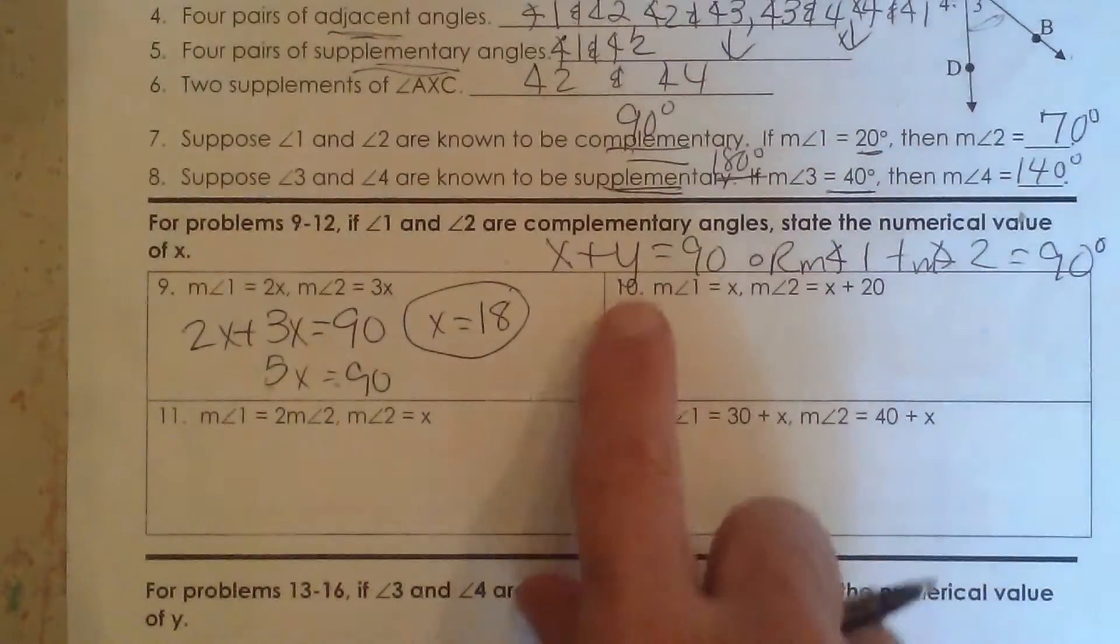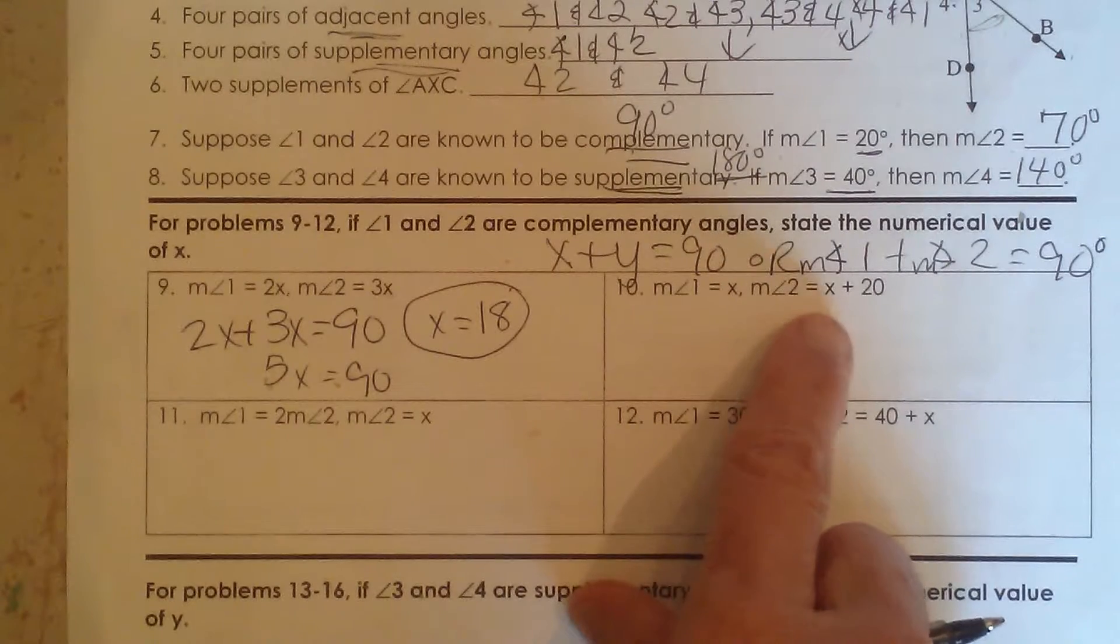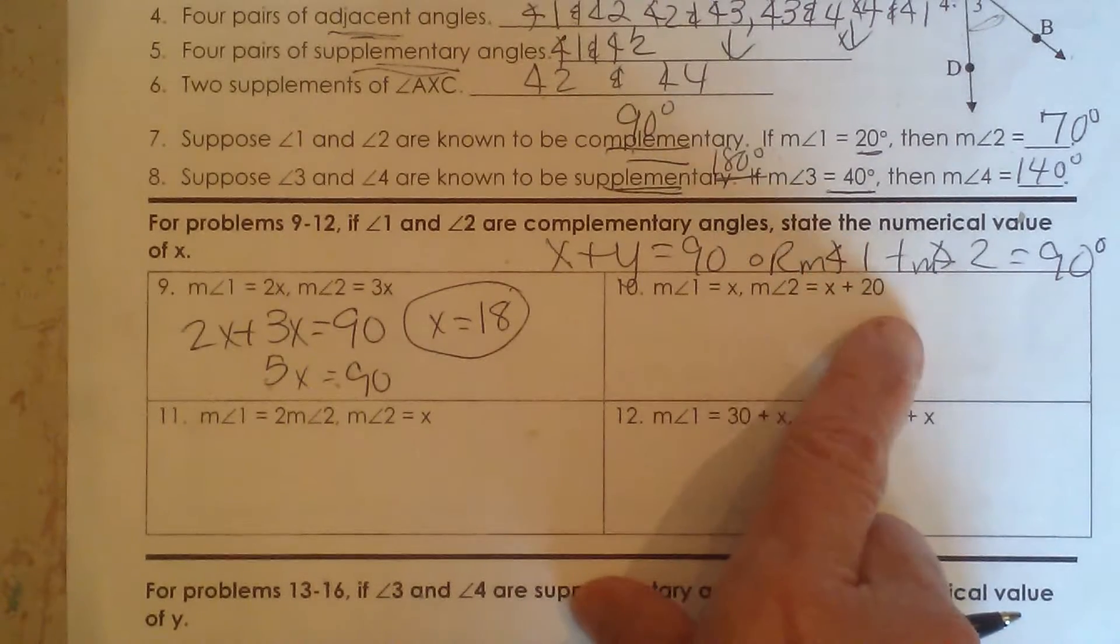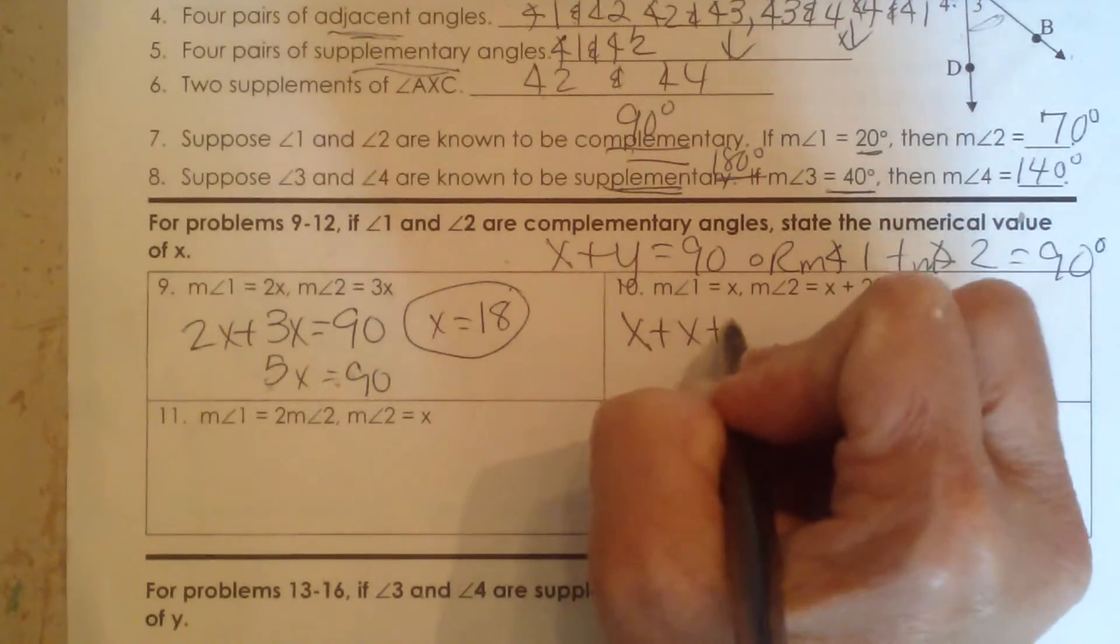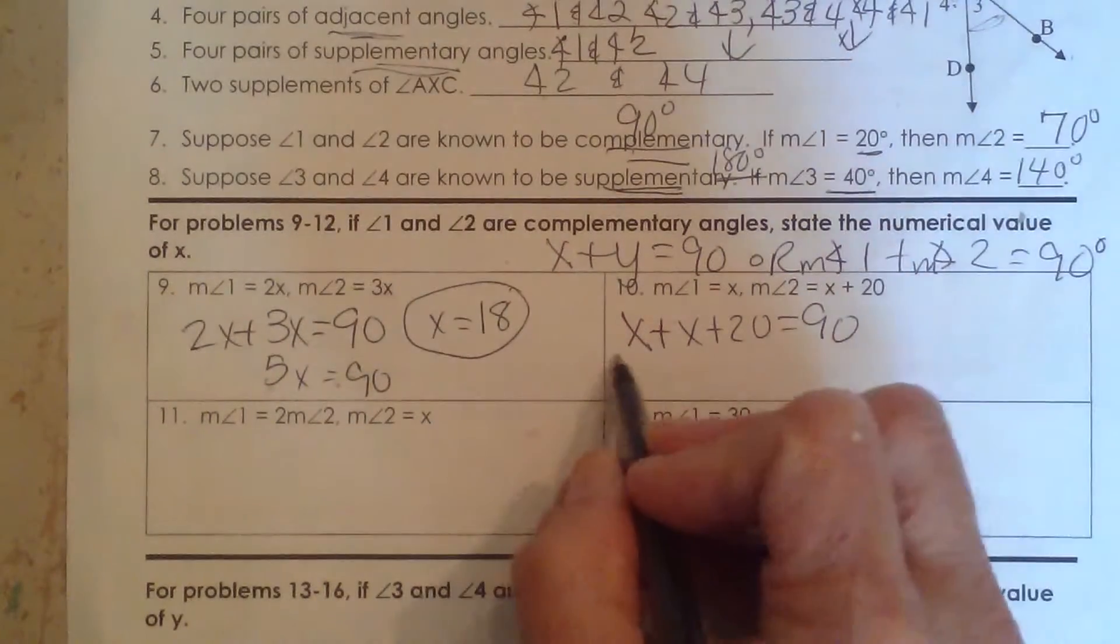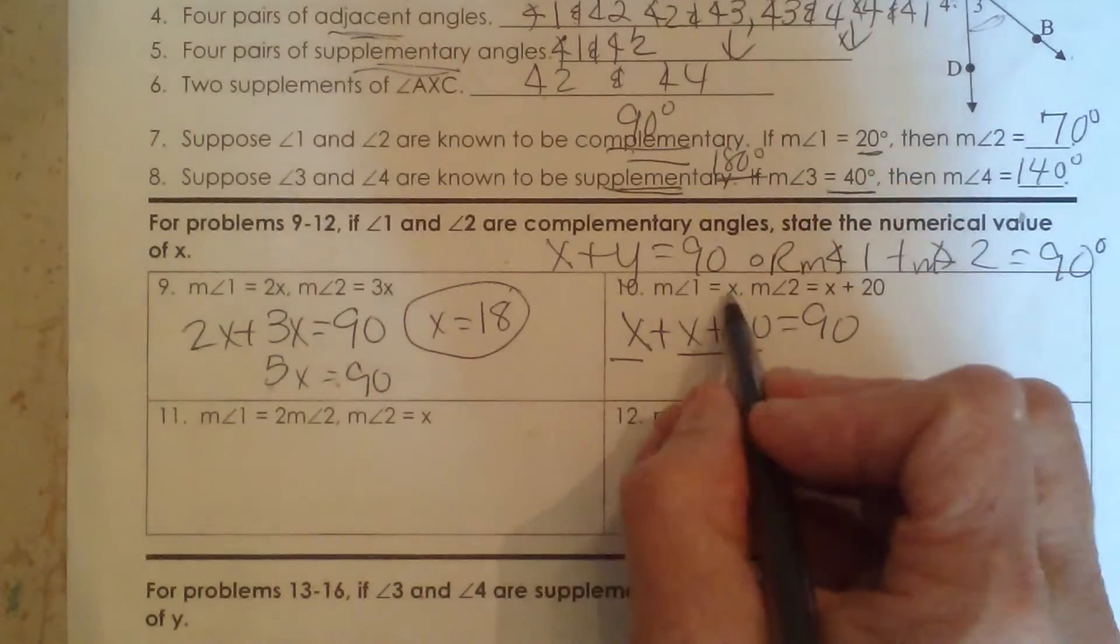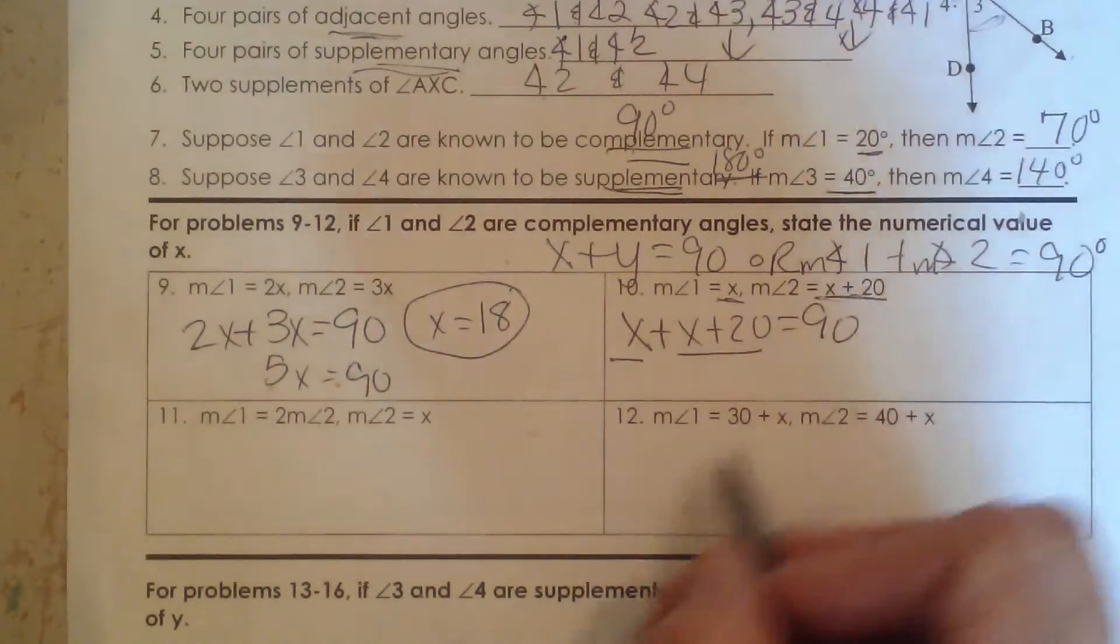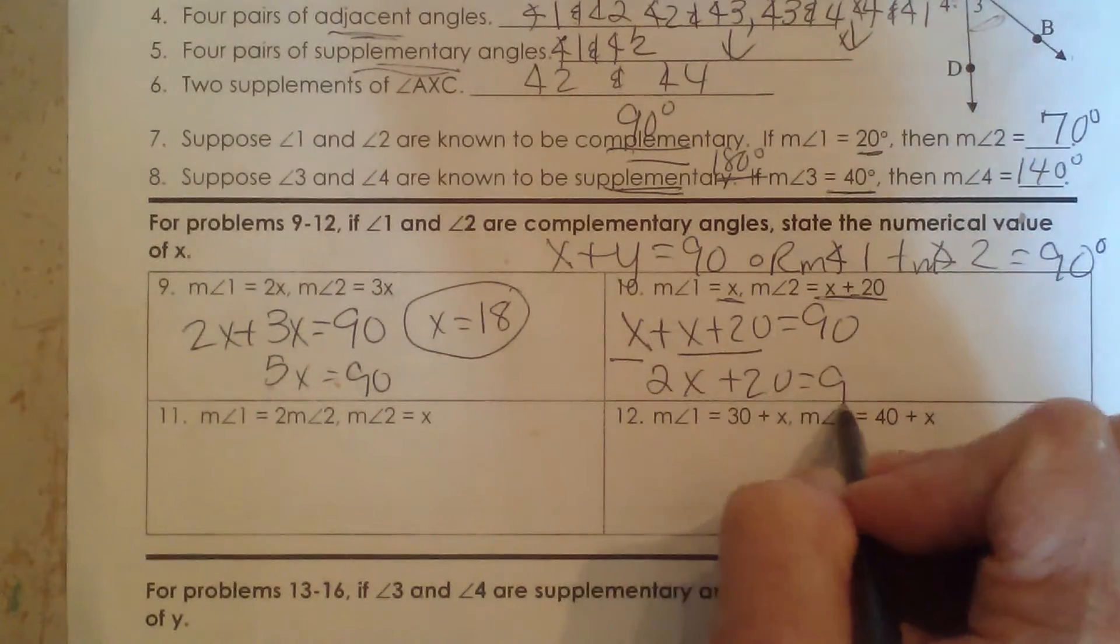Okay, let's look at a second one. The measure of angle 1 is x. The measure of angle 2 is x plus 20. Well if they're complementary, we're going to add those two angles up to 90 degrees. So we have x plus x plus 20 is equal to 90 because that's angle 1 and angle 2. That gives us 2x plus 20 is equal to 90.